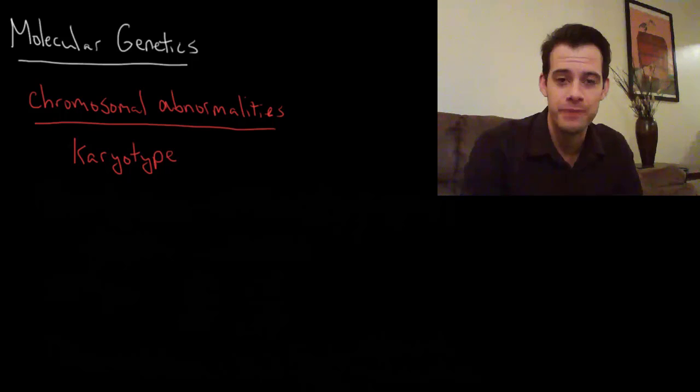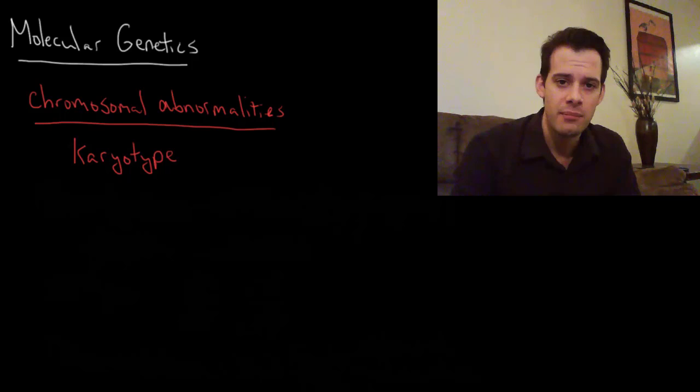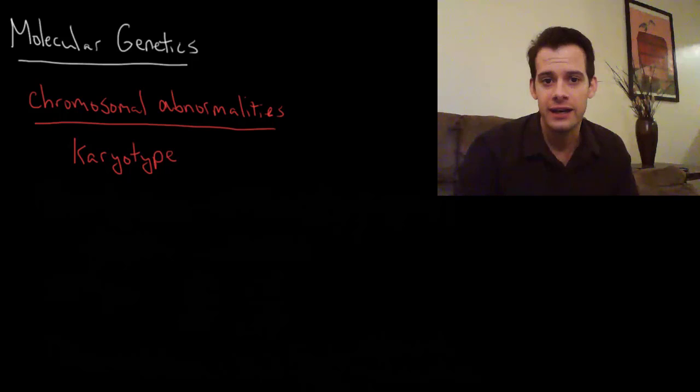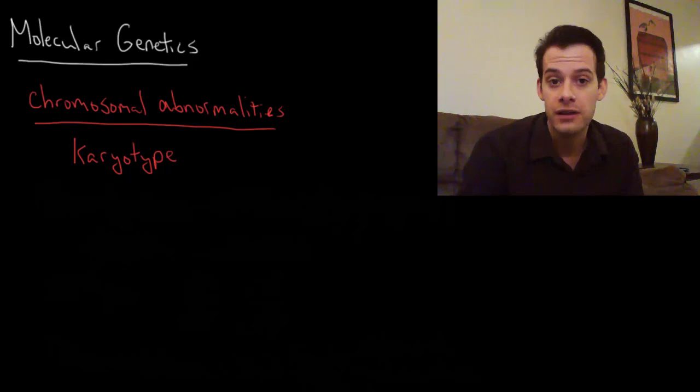Hi, I'm Michael Corayer and this is Psych Exam Review. In the last video I talked about behavioral genetics. We saw how twin studies can be used to estimate the influence of genes on particular traits or behaviors. One of the things I mentioned was that we can't see the role of individual genes — we're just getting an estimate of the relative strength of genes compared to the environment.